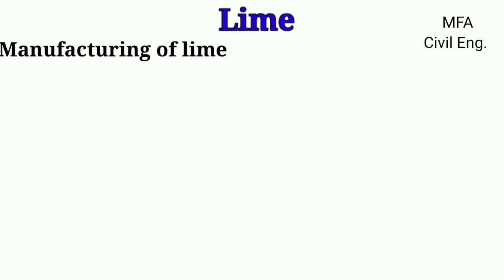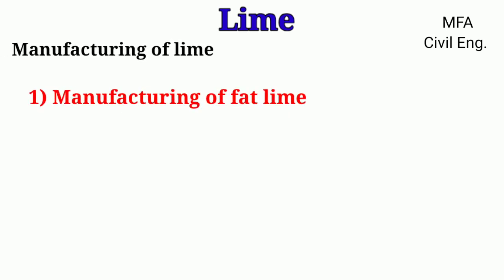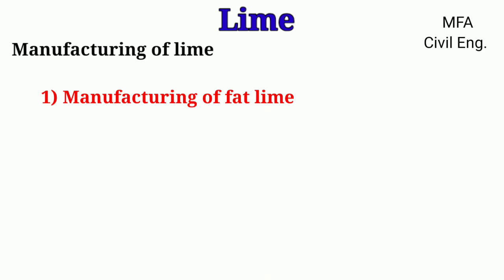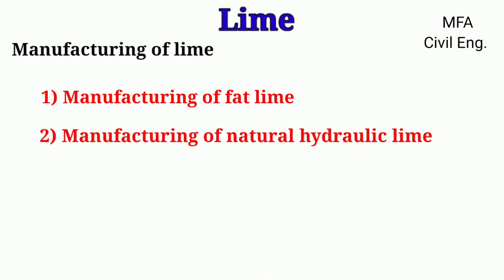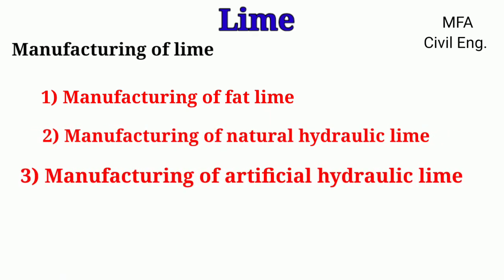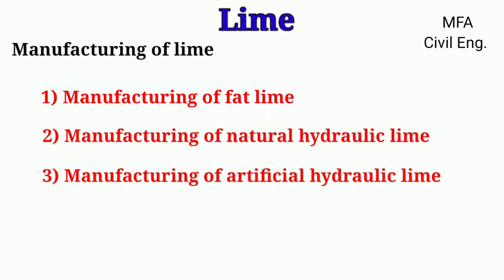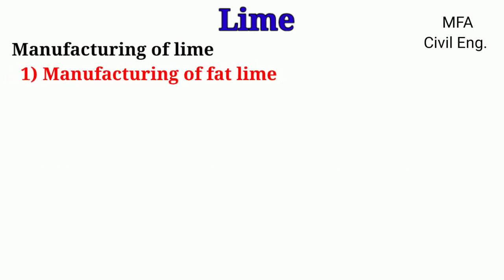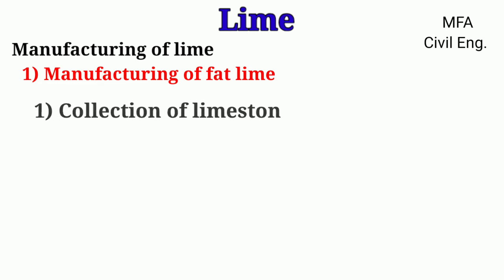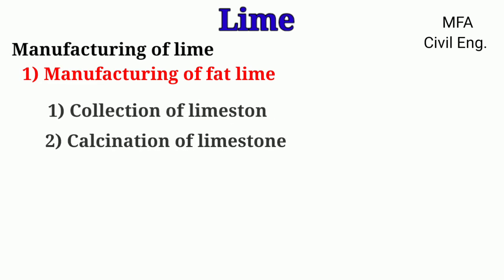Depending on the raw material, the manufacturing of lime is classified into three types: manufacturing of fat lime, manufacturing of natural hydraulic lime, and manufacturing of artificial hydraulic lime. The manufacturing of fat lime consists of various steps: collection of limestone, calcination of limestone, and slaking of burnt lime.